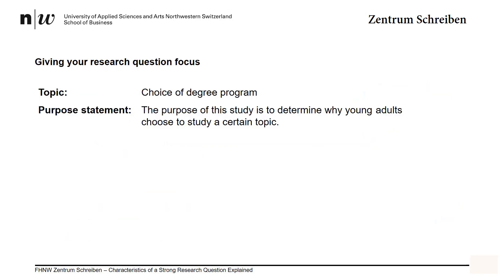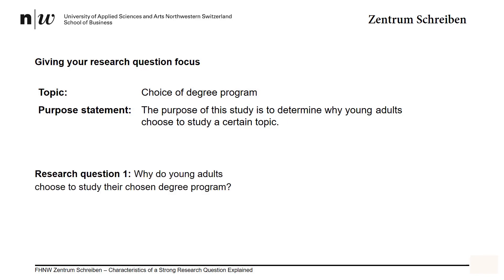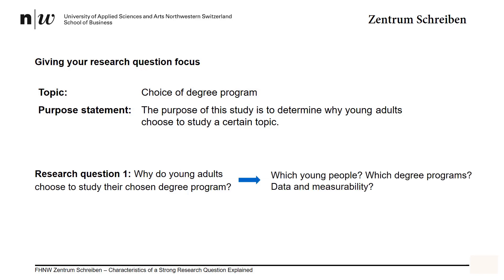Let's try another topic: students' choice of degree program. When choosing a topic, it's important to know why you've chosen it — what do you want to find out? Having a purpose statement will give your research question some focus. Take a question like: why do young adults choose to study their chosen degree program? This question is too broad. Depending on which young people, from which culture, from which socioeconomic group, your answer may be very different. Additionally, which type of degree programs? People aiming for a degree in philosophy versus economics may have very different motivations. With such an open question, where will you collect data, what type of data do you need, and what method should you use? Will it be measurable and comparable? So this question is really too broad.